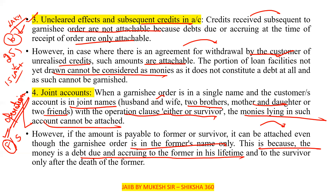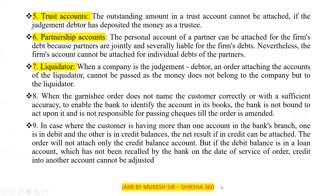The fifth point is the trust account. The outstanding amount in a trust account cannot be attached if the judgment debtor has deposited the money as a trustee. In that case, that amount cannot be attached.